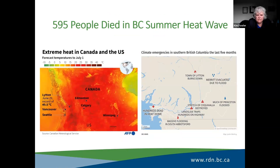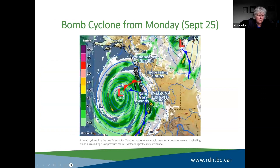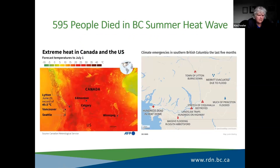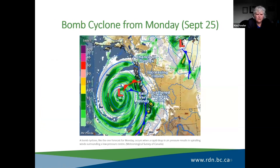Lytton hit 49.5 degrees centigrade. 595 people died in that heat wave, and almost 80% of them were 70 years and older — so it's a social impact as well, one of the things to consider. We've now been using terms like bomb cyclones, atmospheric rivers, heat domes — all of those have become new terminology for us as this risk increases.